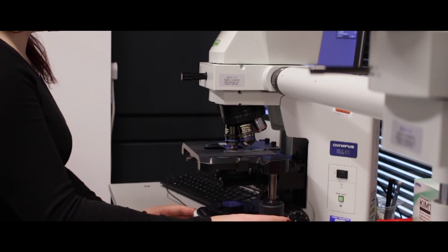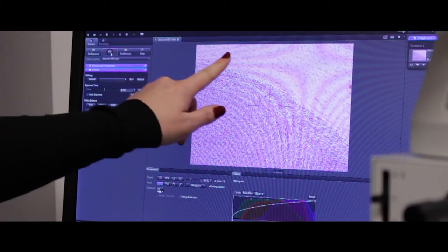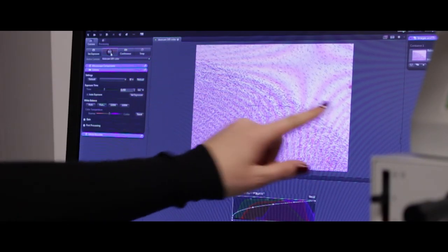Staining of the tissue demonstrates the location of the tumor. Normal tissue often appears pink whereas the tumor is a darker purple color.